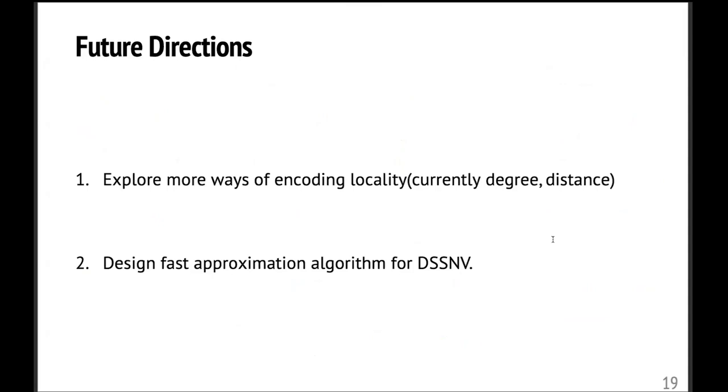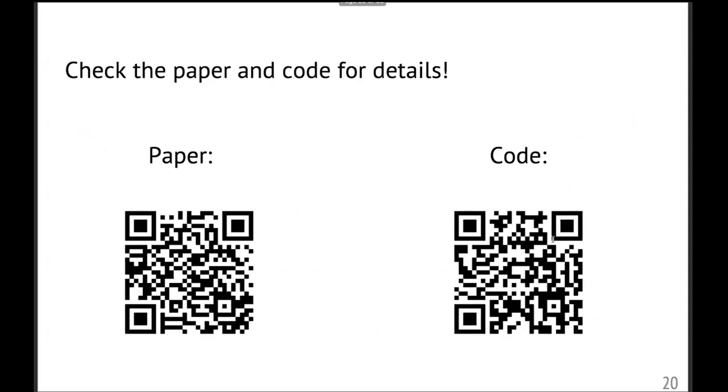And here are some future directions. The first one is we want to explore more ways of encoding locality. Right now, people are mainly using degree and distance, but they both have their own limitations. And secondly, as I mentioned, approximation algorithms will lose approximation guarantees for the DSSNV. So it's really interesting if we can design some fast approximation algorithms for them. Thanks for listening. If you are interested, you can take a look at the paper and the code is published. Thanks.